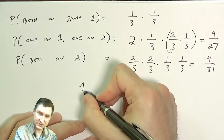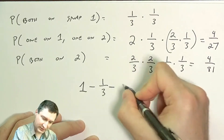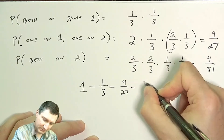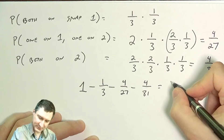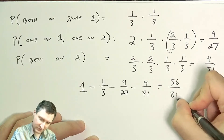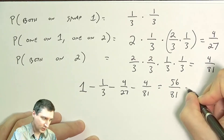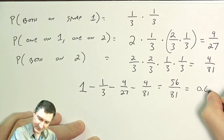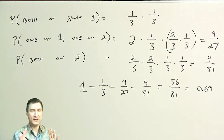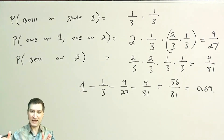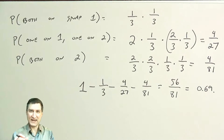So the overall answer is 1 − 1/9 − 4/27 − 4/81. Canceling out the fractions gives 56/81, which is about 0.69. This is a good approach: take something with infinitely many outcomes and swap it to just a few easy outcomes to compute.